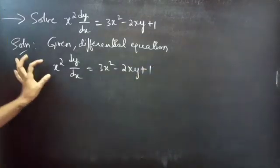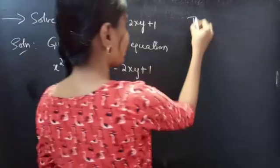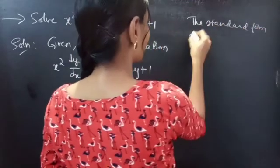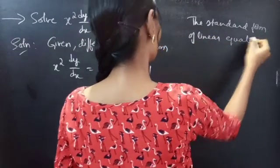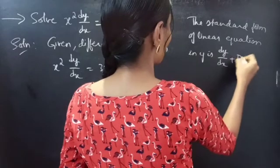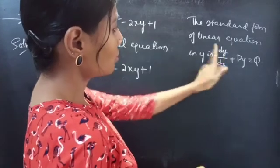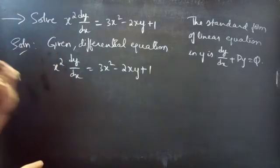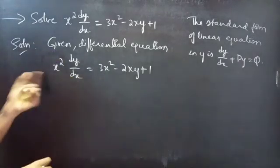We have to reduce the given differential equation to the standard form of a linear equation. We know that the standard form of a linear equation in y is dy by dx plus P times y equals Q, where the coefficient of dy by dx is 1. So we will divide the whole equation by x squared.